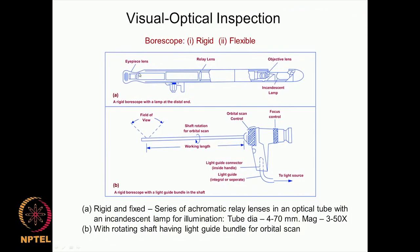Inside the tube there is a series of achromatic relay lenses. These lenses help focus the light on the area to image it, and then this image is sent back to the eyepiece at the other end. So one end — the distal end — going inside the part has the light source to illuminate the area and the objective lens to form the image. On the other side, you have an eyepiece through which you see the image of the area and then inspect it — trying to see if you could see some external damage or surface defect. This eyepiece can be interchangeable, providing some magnification in the range of 3 to 50x, which will further enhance the visibility.